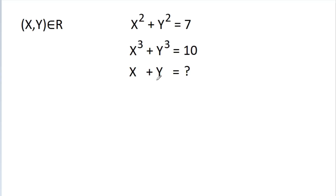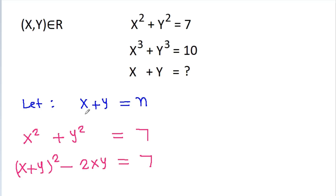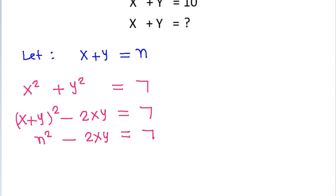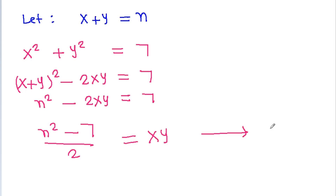Let x plus y be equal to n. We have given that x squared plus y squared is equal to 7, and x squared plus y squared is equal to (x plus y) squared minus 2xy, which equals 7. So n squared minus 2xy equals 7, or xy equals (n squared minus 7) divided by 2. Suppose this is equation 1.